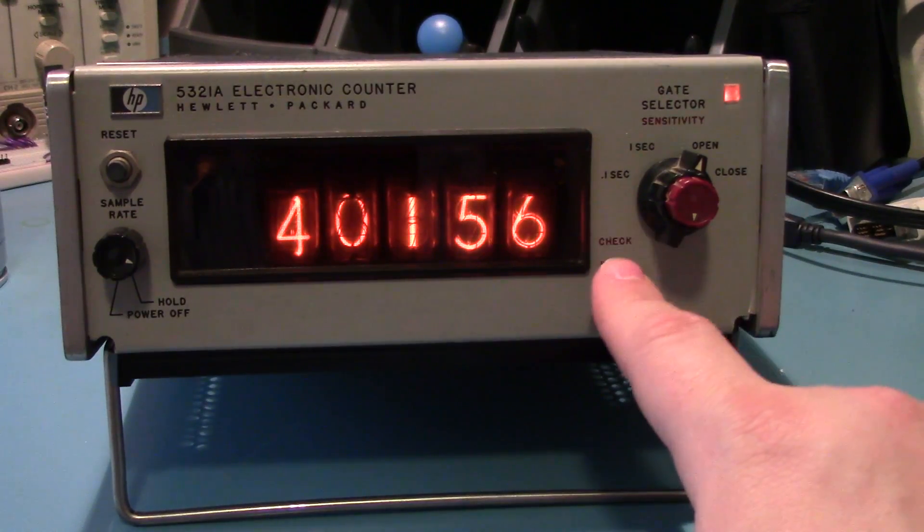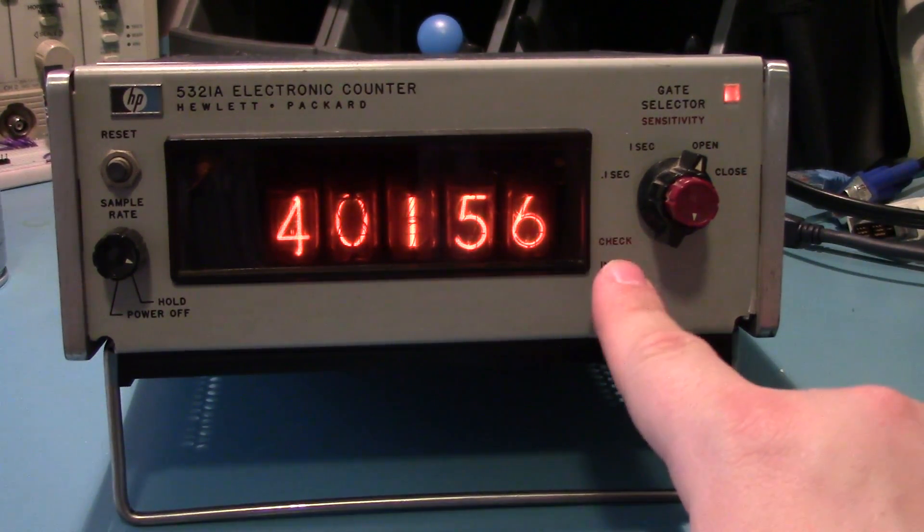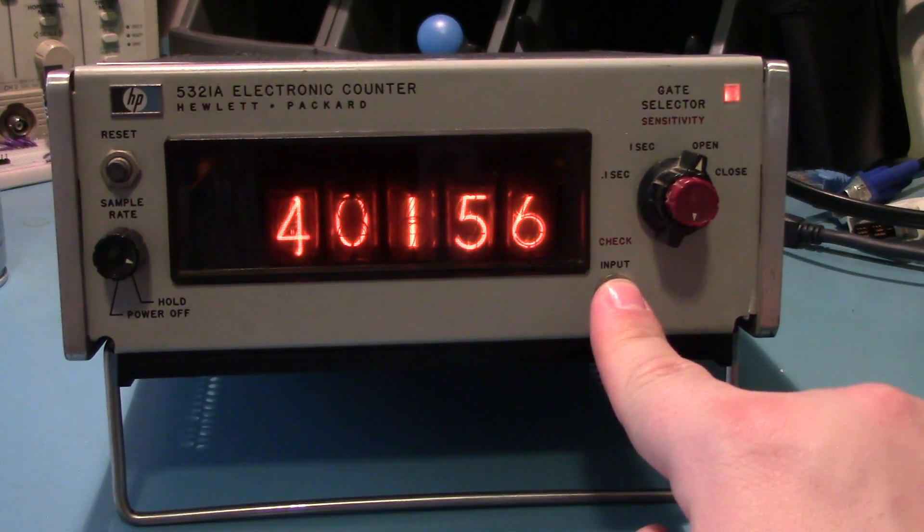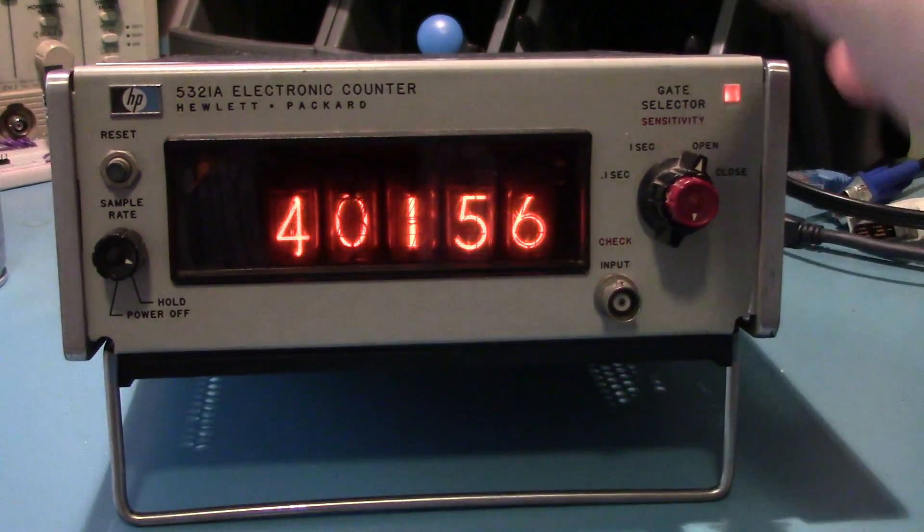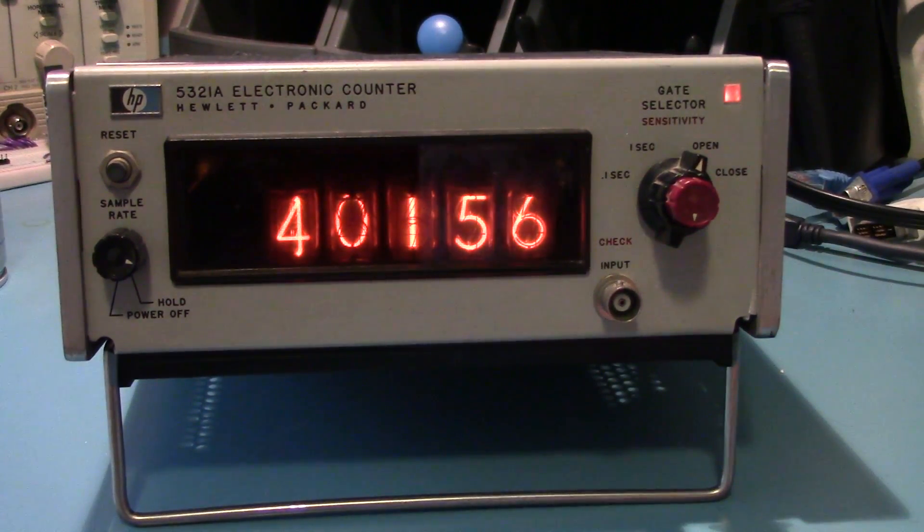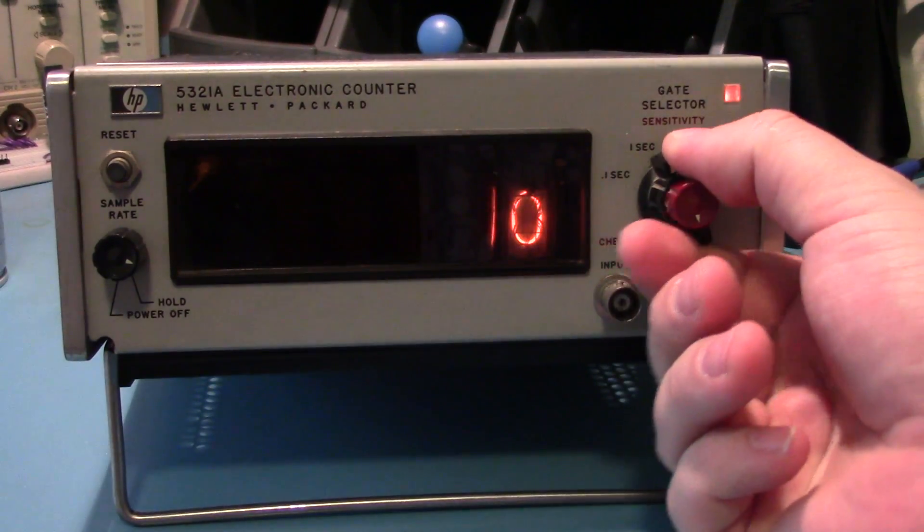I believe that's its maximum input rate. And the options had temperature-controlled ones or oven-controlled, I believe. But this one is basically, it does have an option and I don't even remember what the option does. I did find the service manual for this thing. There's not too much information on this particular model, probably just because it's an electronic counter, not a frequency counter. So that could be it. That could be why people just don't have too much interest in it.